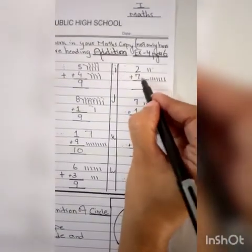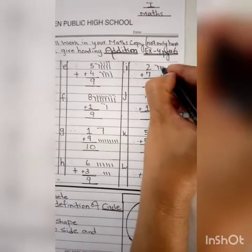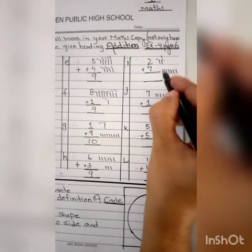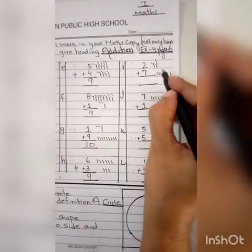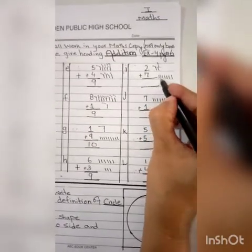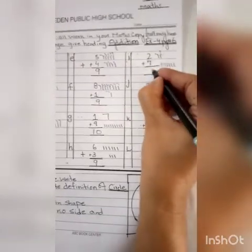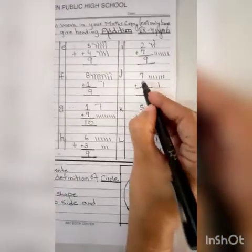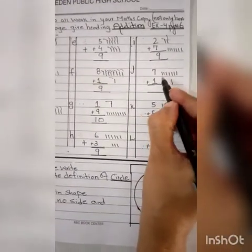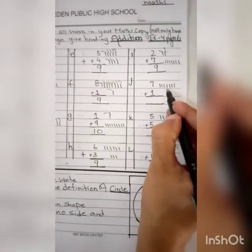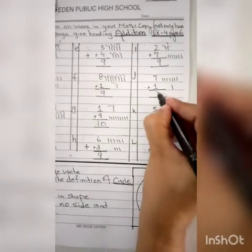I. 2 plus 7. Ab isko mein aapko aisi example deti hoon — aapke paas 2 sweets hain, aur mama ne aapko 7 sweets aur de di. Toh total sweets aapke paas kitni shari ho gayi? Chalye, hum count karte hain: 1, 2, 3, 4, 5, 6, 7, 8, 9. Toh aapke paas 9 sweets aa gayi. Number J — number kaun sa hai? 7 plus 1. Ab isko plus karte hain: 1, 2, 3, 4, 5, 6, 7, aur plus 1 add kar diya. Toh hamara answer aa gaya 8.